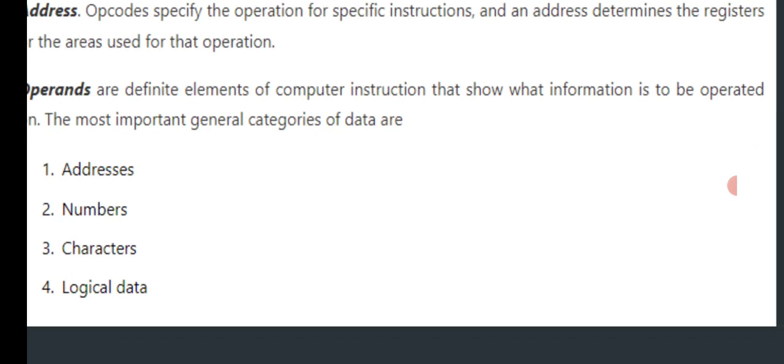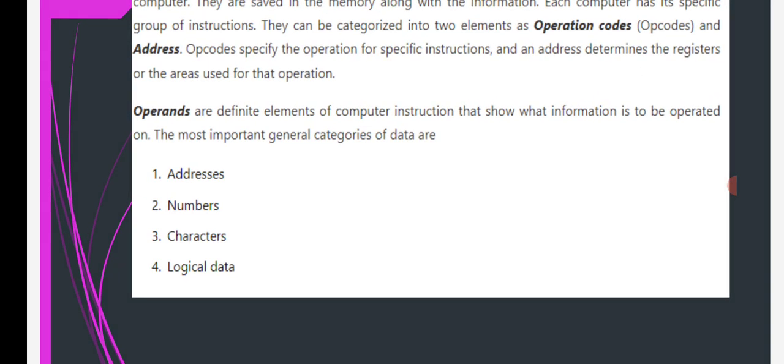Operands are definite elements of computer instruction that show what information is to be operated. The most important general categories of data are: addresses, numbers, characters, and logical data.